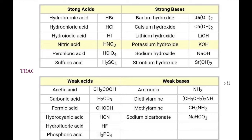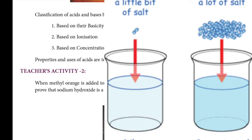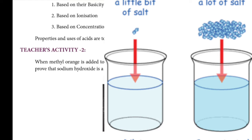Then, based on concentration — the amount of acid or base dissolved in water. Concentrated acid means a relatively large amount of acid dissolved in water or solvent. Diluted acid means a small amount of acid dissolved in a large amount of solvent. Similarly, concentrated alkali contains a high percentage of alkali in a small amount of solvent. Diluted alkali has a large amount of solvent and less amount of alkali.